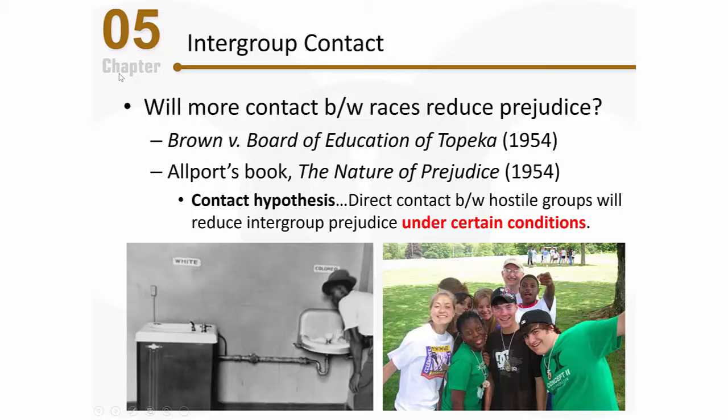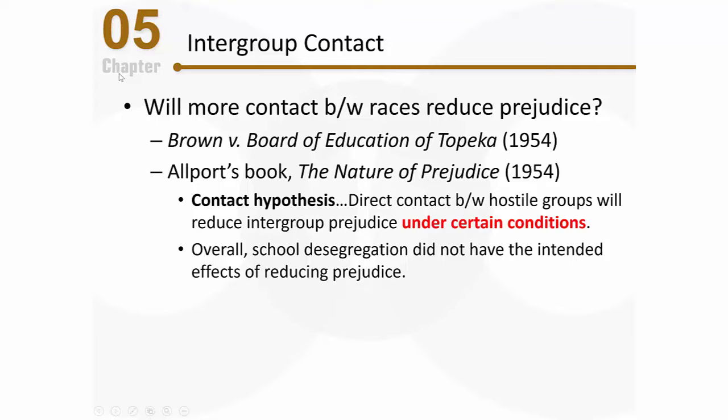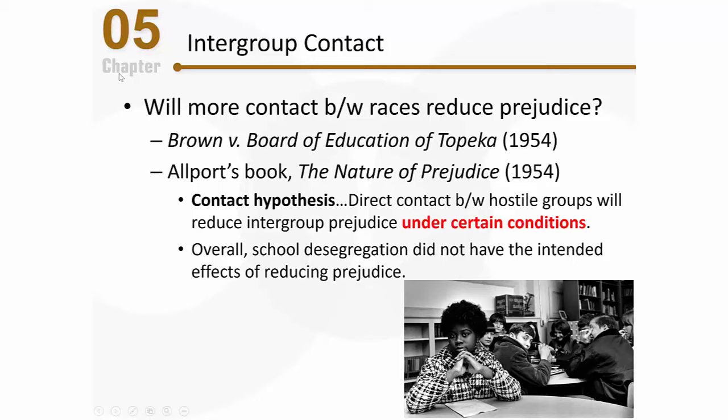We're going to talk about those specific conditions soon. But the problem was that even though the schools were desegregating, some of those really important conditions were not met. So when the two groups got together, there really was not necessarily a reduction in prejudice. Overall, school desegregation didn't really have the intended effects that we all wanted. What many school districts saw was that although kids of different racial groups were within the same schools, the kids within the racial groups still tended to hang out with each other and each other only. So in some ways, it seemed like the contact hypothesis was wrong and that contact between the races would not reduce prejudice.